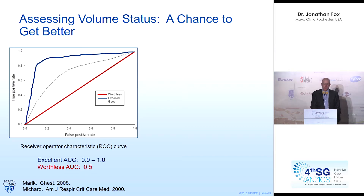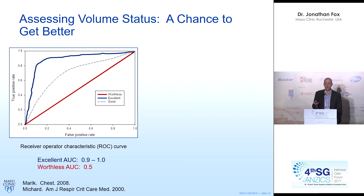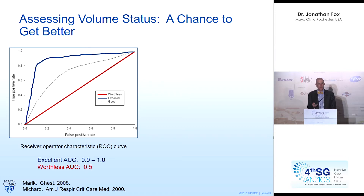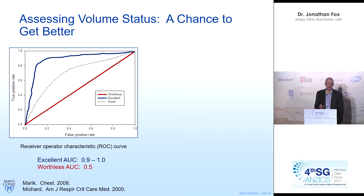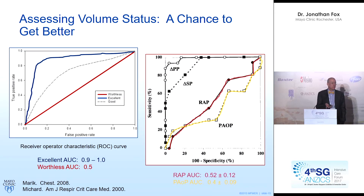One way of comparing the utility of tests is to create a receiver-operator characteristic curve, plotting the true positive rate as a function of the false positive rate. What you want is to minimize the false positive rate for any given true positive rate, so the curve rises steeply and the area under the curve approaches 1. For a test where you're equally as likely to get a true positive as a false positive, you get a straight line with area under the curve of 0.5—the same as flipping a coin. Our standard static measures of intravascular volume are no better than flipping a coin.